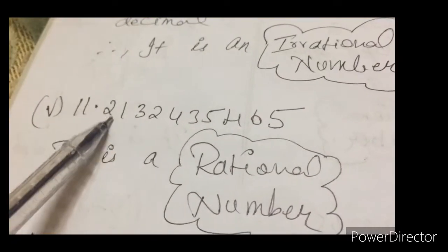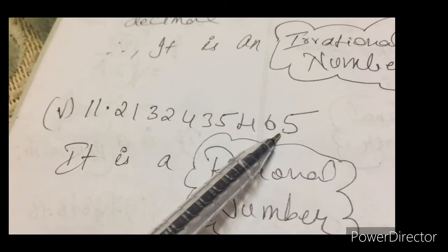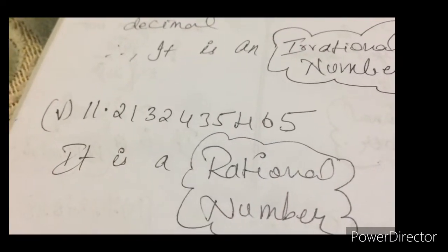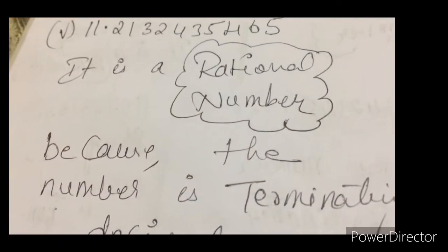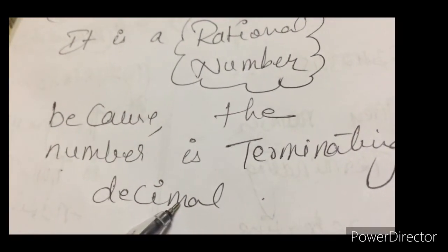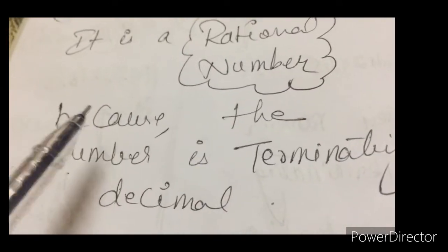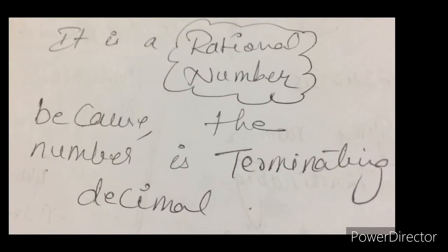This type of the number, we are not bothered whether the number is repeating or not. But we are seeing that this is a terminating decimal. That is why it is a rational number. It is a terminating decimal and repeating or not bothered. It is a rational number.